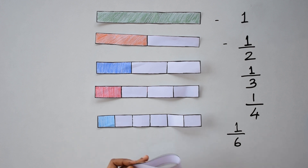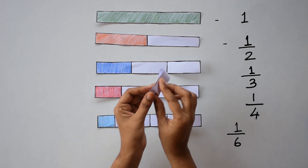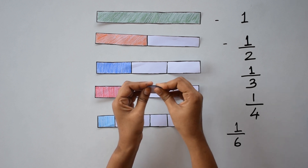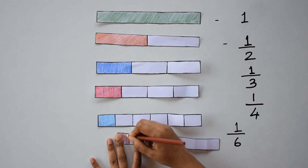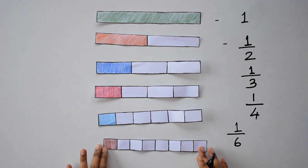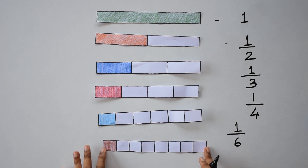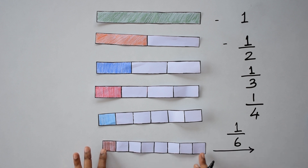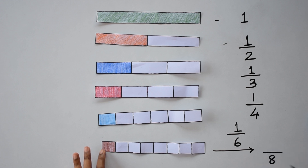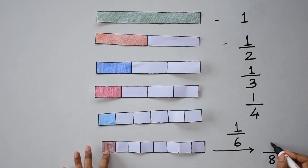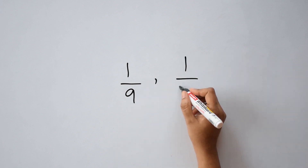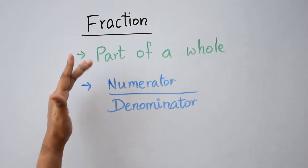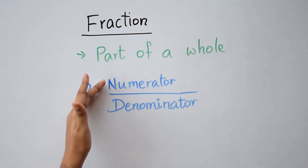Let's move on to the next one. Now we are going to divide the paper into eight equal parts. So first we make four equal parts and then fold it in the center, and we are going to shade one part. So what fraction does this shaded portion represent? Let's write down. The total number of parts is eight and the number of shaded parts is one. So this is one by eight or one-eighth. Similarly, can you take a strip of paper and represent one by nine and one by 12? To recap, a fraction is part of a whole and can be represented as numerator by denominator. Thank you for watching and watch this space for more interesting activities.